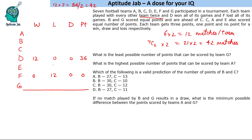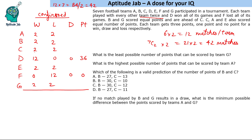For how many other matches can we determine their results? For A, we know A won 2 matches against F and lost 2 matches to D — so at least 2 wins and 2 losses are confirmed. Similarly, B won 2 matches against F and lost 2 matches to D, and C, E, and G also each won 2 matches against F and lost 2 to D. These are the confirmed matches. So we have 22 confirmed matches in total.